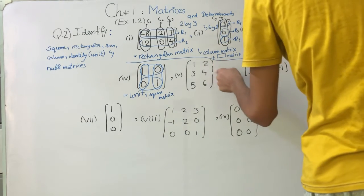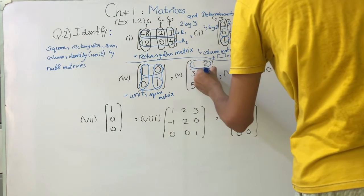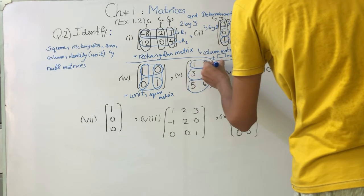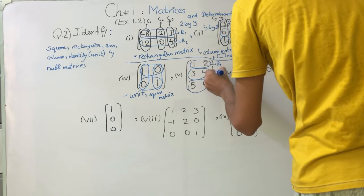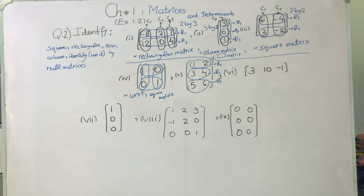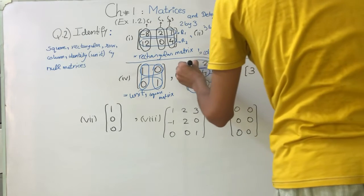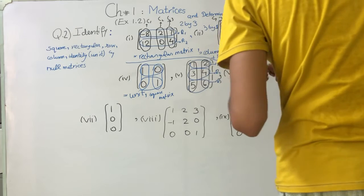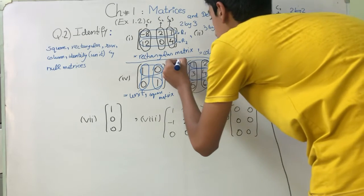Next matrix: [1, 2; 3, 4; 5, 6]. Row number 1, row number 2, row number 3 — R1, R2, R3 — and column number 1, column number 2 — C1, C2. This is a 3×2 matrix. The number of rows is not equal to the number of columns, so this is a rectangular matrix.